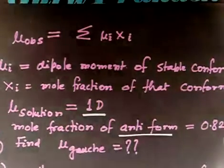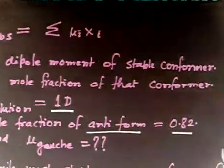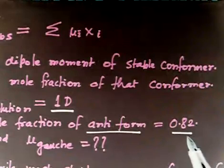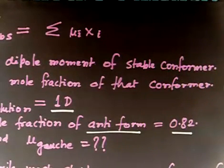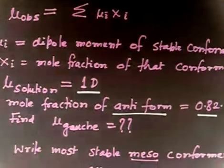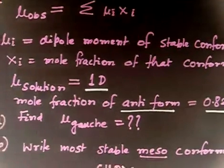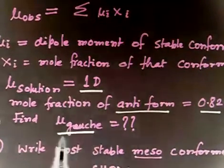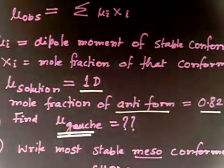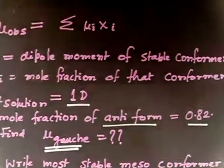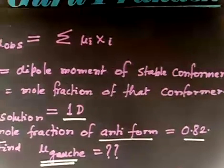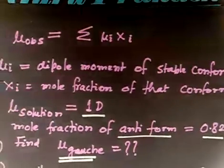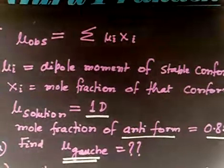The mole fraction of the anti form is 0.82. We need to find the mole fraction and calculate μ_gauche, the dipole moment of the gauche conformer. Let us discuss the first part.